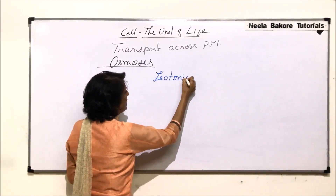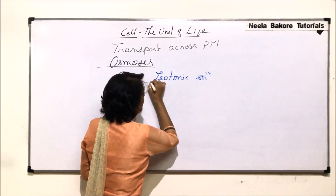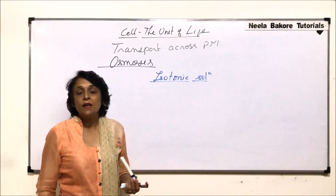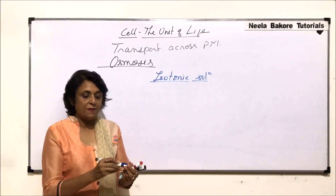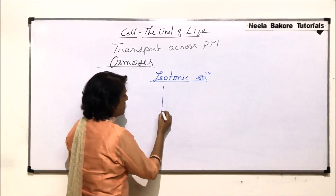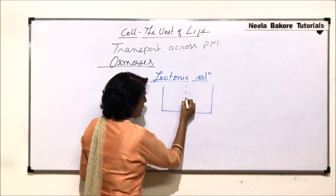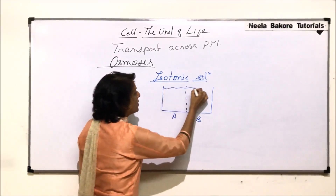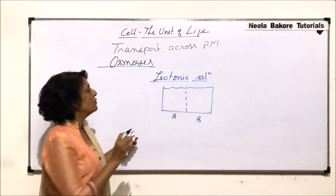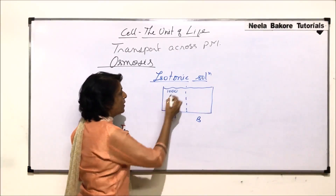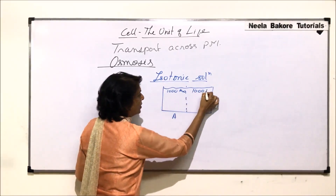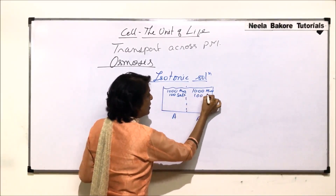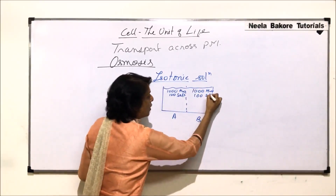We are talking of isotonic solutions. Whenever we use the words hypo and hyper, they mean more and less. Isotonic means two solutions separated by a semi-permeable membrane have the same concentration. Let us take an example: compartment A and B both have one thousand water molecules and one hundred salt molecules each.